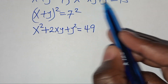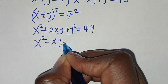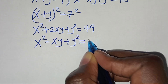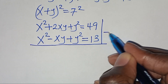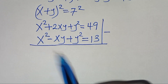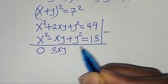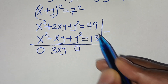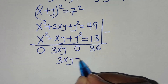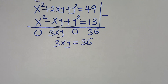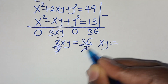We have x squared minus xy plus y squared equals 13. Subtracting this from x squared plus 2xy plus y squared equals 49, we get 3xy equals 36. Dividing both sides by 3 gives xy equals 12.